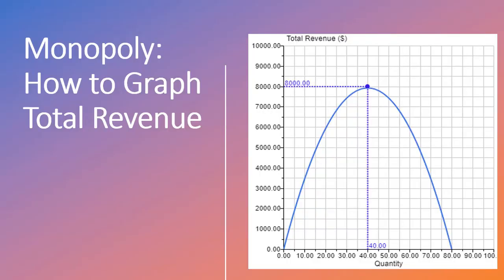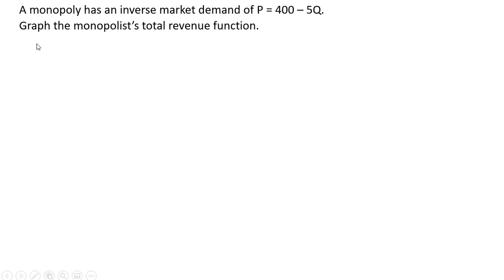Hello, in this video we're going to graph the total revenue function for a monopoly. A monopoly has an inverse market demand of P equals 400 minus 5Q.